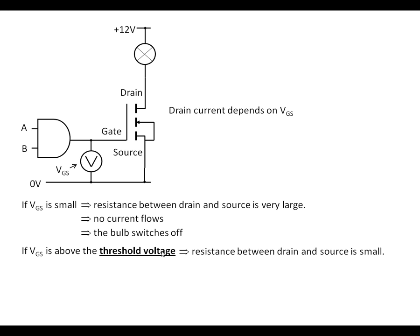Once we go above the threshold voltage across the gate and the source, the resistance between the drain and the source starts to reduce. That means a large current can start to flow, and that means the bulb is going to switch on.